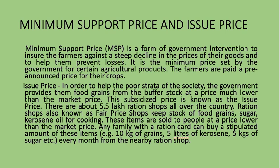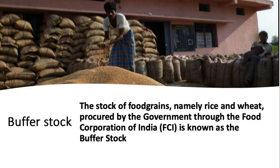What is Issue Price? To help the poor, the government provides food grains from the buffer stock at a price much lower than market price. This subsidized price is known as issue price. There are about 5.5 lakh ration shops all over the country, also known as fair price shops. They keep stock of food grains, sugar, and kerosene oil. These items are sold at below-market prices, and any family with a ration card can buy a stipulated amount — for example, 10 kg of grains, 5 liters of kerosene, and 5 kg of sugar every month.